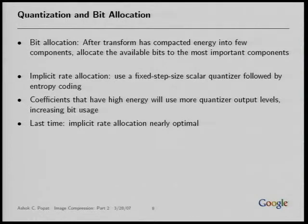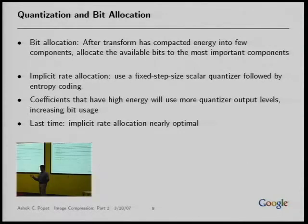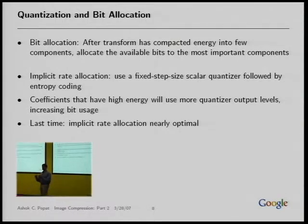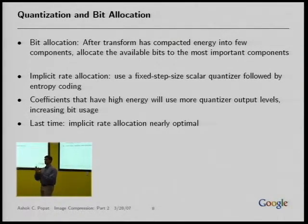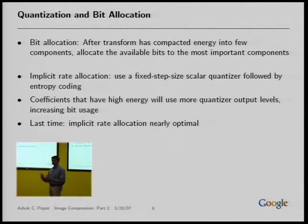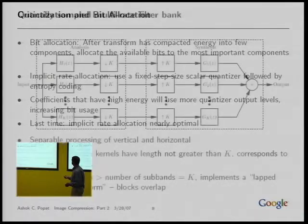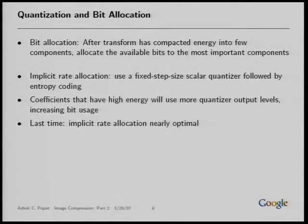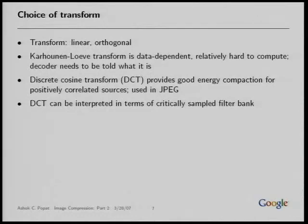A question: what is a positively correlated source? In the simplest one-dimensional setting, if I have adjacent samples, they could depend on each other. If one value is high and the one next to it is also high, and when one value is low the one next to it is low, that's positively correlated. You can imagine a situation where they alternate — that's a different kind of correlation. So we settled on the DCT as a reasonable choice of transform.